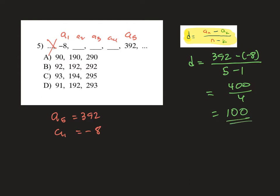What that means is our common difference is 100. These terms are going up by 100 every time. So negative 8 plus 100, that is 92. And 92 plus 100 is 192. And 192 plus 100 is 292. And then, of course, if we added 100 again, we get to 392. So that is going to be letter B right here.